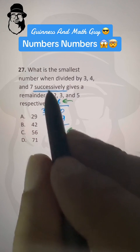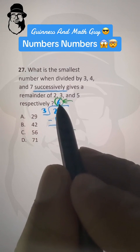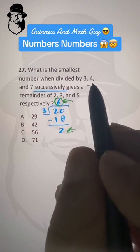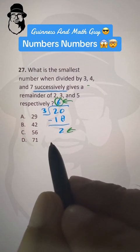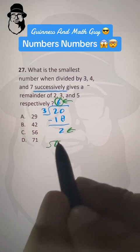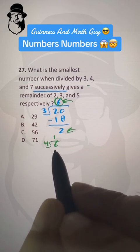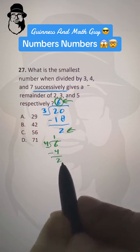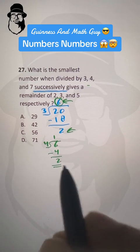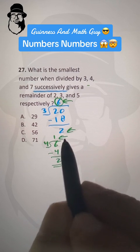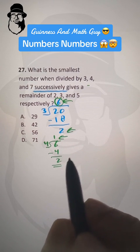Then successively means this same answer 6, we divide it by 4. So 6 divided by 4 gives us 4 times 1 is 4 and we have remainder 2. Now here the answer is 1 and the remainder is 2.